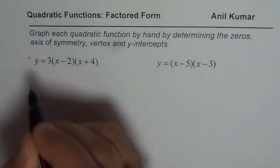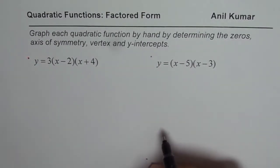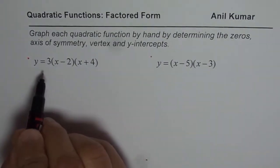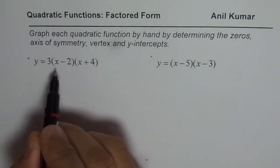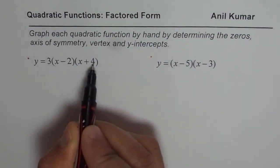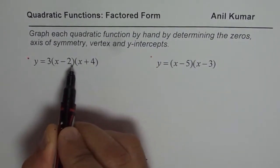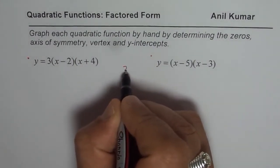Let me take the first one. This is for you to practice. So let us first find the zeros. Zeros are when each factor is equated to zero - what value of x will make it zero? That is how you find zeros.